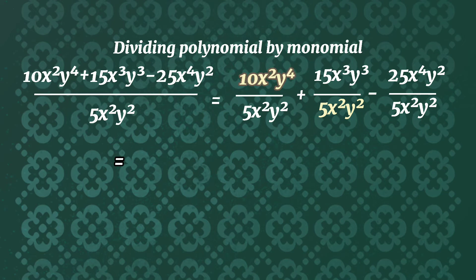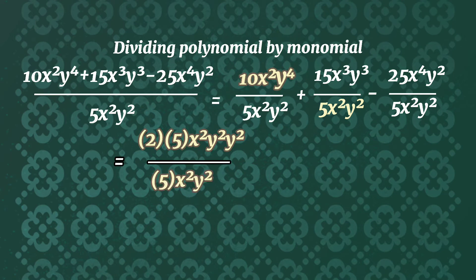The GCF or the greatest common factor of 10 and 5 is 5. The GCF of x² and x² is x². The GCF of y⁴ and y² is y². The greatest common monomial factor is 5x²y². Remove this so that the remaining is the quotient, which is 2y².